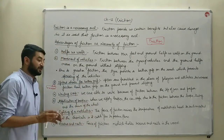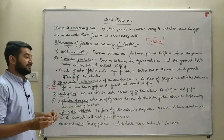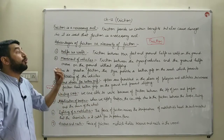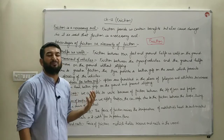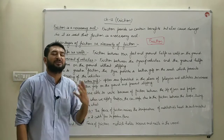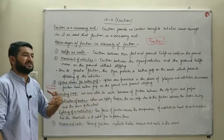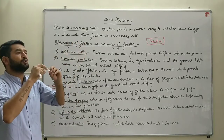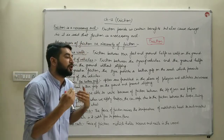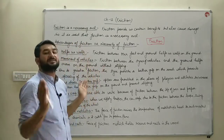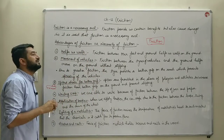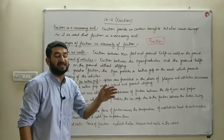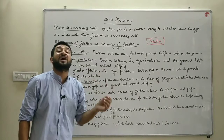Due to those irregularities on boards like green boards and blackboards, friction between the chalk and the board increases, and we can write easily on a surface with more irregularities as compared to a glass board.